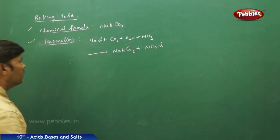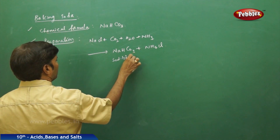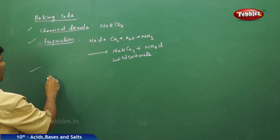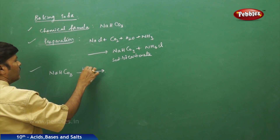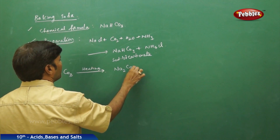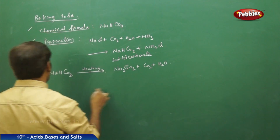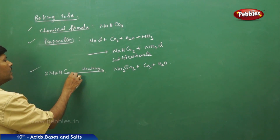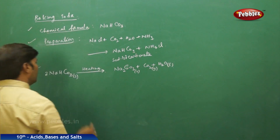The obtained product is sodium bicarbonate. Now, when sodium bicarbonate is heated, it disproportionates to give sodium carbonate plus carbon dioxide plus H₂O. Balancing the equation: 2 moles of sodium bicarbonate (solid) gives sodium carbonate (solid) plus carbon dioxide (gas) plus water (liquid).